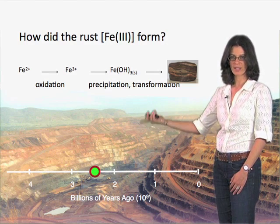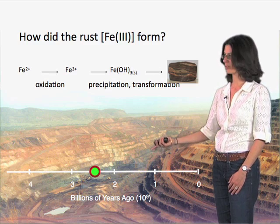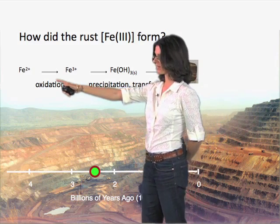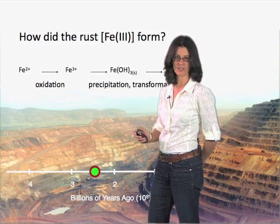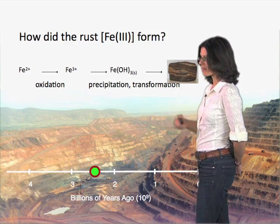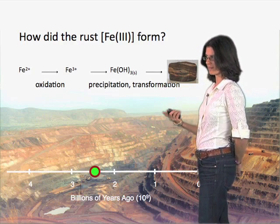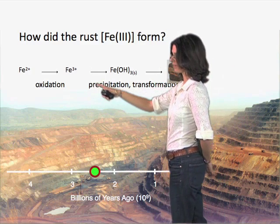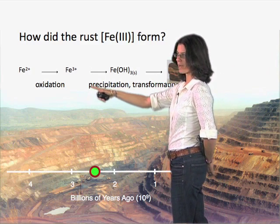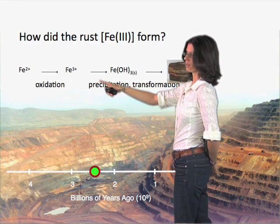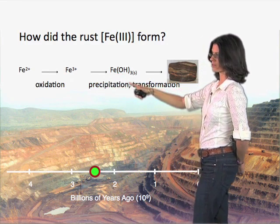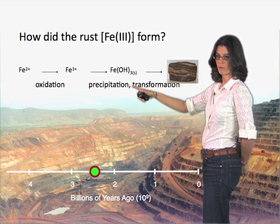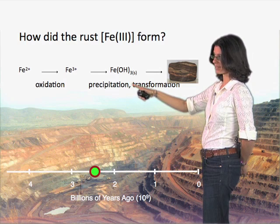How did this iron get into this big deposit? Well, it began a long time ago in ancient seas in the form of ferrous iron — that's called iron II. Then some process, which I'll get to in just a minute, oxidized this ferrous iron to ferric iron. At that point, it could react with constituents in the water, such as hydroxyl species, to form iron minerals — such as this one — ferric oxyhydroxide.